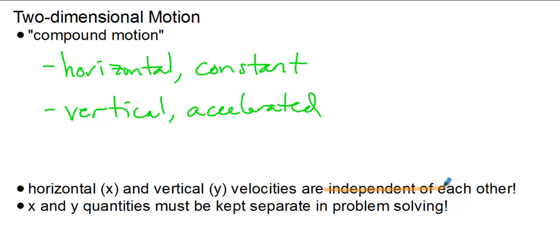If an object is fired horizontally from a certain height and dropped from the same height, they'll hit the ground at the same time. X and Y quantities, because they are independent of each other, must be kept separate when we do problems. So compound motion, two-dimensional motion, projectile motion, all the same thing, and they deal with an object that's traveling both horizontally at a constant rate and at the same time vertically while its motion is being accelerated.